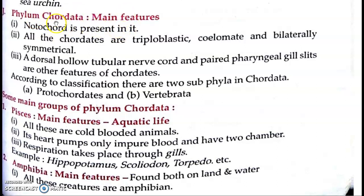Chordata ke andar woh animals aate hain jinke andar Notochord present hoti hai. Ab Notochord kya hota hai — basically Notochord ek aisi skeleton hai, cartilage se bana hua ek skeleton, rod type ek supporting structure hota hai. Yeh cartilage ka bana skeleton hota hai, rod type supporting structure hoti hai.